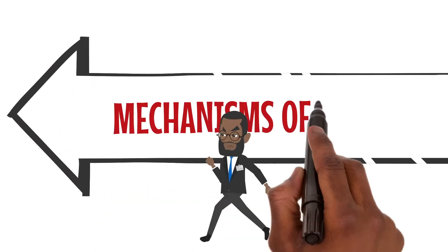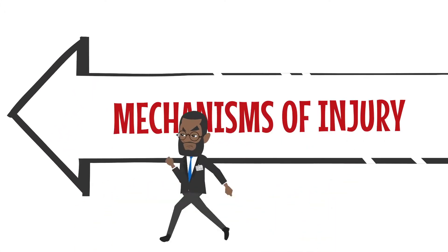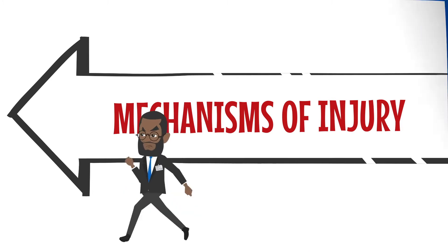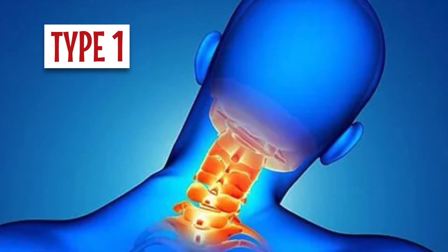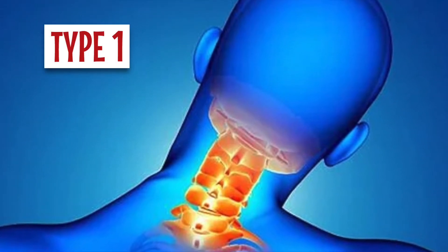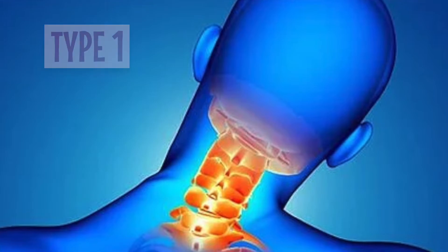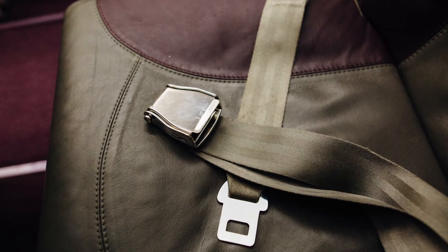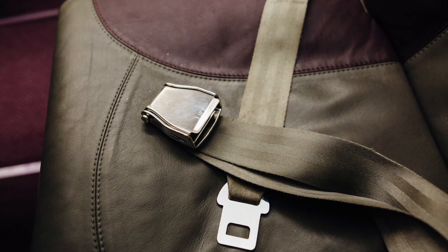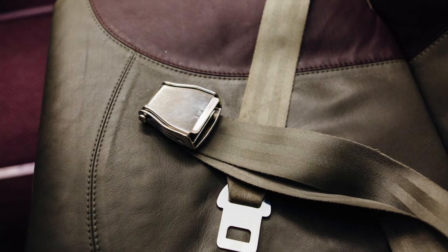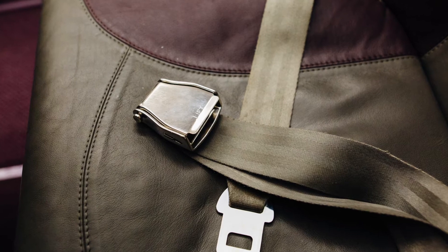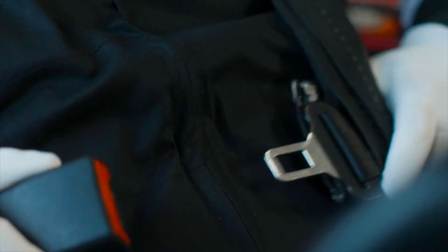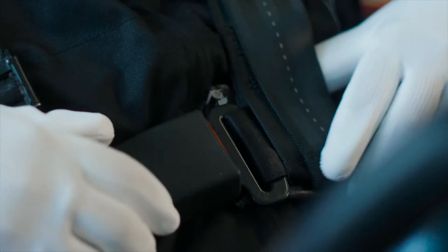Now on to the mechanism of injury. There is Type 1, which is direct cervical trauma. This could be caused by things such as near hanging, a seat belt, or strangulation. It is responsible for about 10% of blunt carotid injuries.